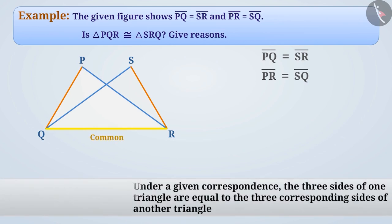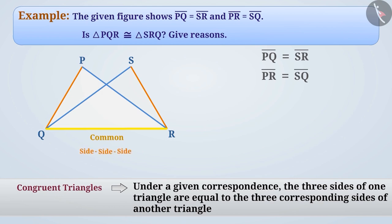You will remember that if the three sides of one triangle are equal to the three corresponding sides of another triangle, then the triangles are congruent. This condition is called the side-side-side criterion, or SSS criterion. Here, the triangles are congruent under the correspondence. We can say that triangle PQR and triangle SRQ are congruent.